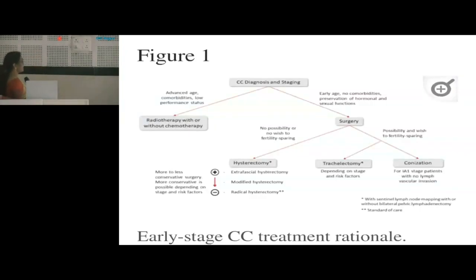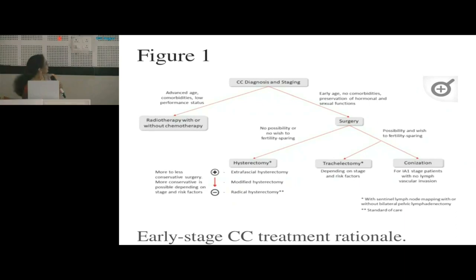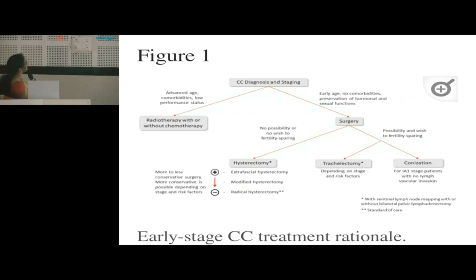Early stage carcinoma cervix has the option of surgery; late stage 3 and 4 does not. Other factors deciding management include: advanced age, comorbidities, and low performance status — these favour radiotherapy with or without chemo. If the patient is young with no comorbidities and wishes to preserve hormonal and sexual function, we opt for surgery.